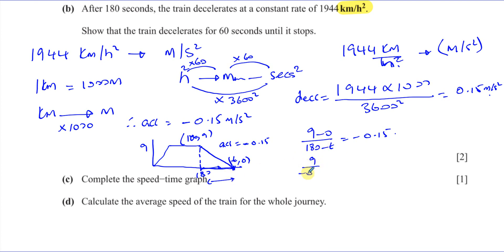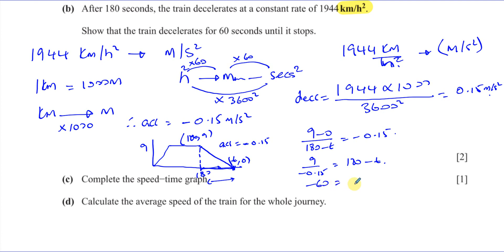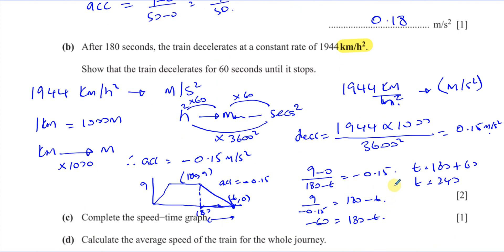So this gives us 9 divided by negative 0.15 equals 180 minus T. Now 9 divided by negative 0.15 is negative 60. So we have negative 60 equals 180 minus T. Rearranging, T equals 180 plus 60, so T equals 240. The train comes to rest at 240 seconds. Therefore 240 minus 180 is 60 seconds — this shows that the deceleration time is 60 seconds.